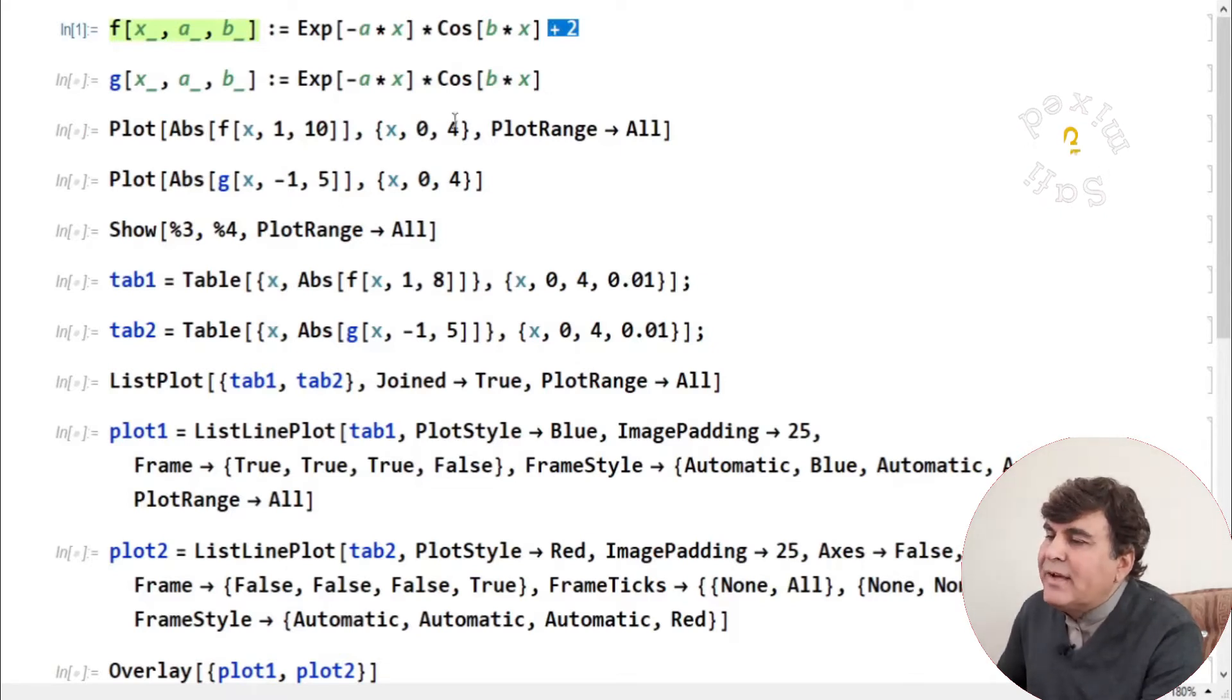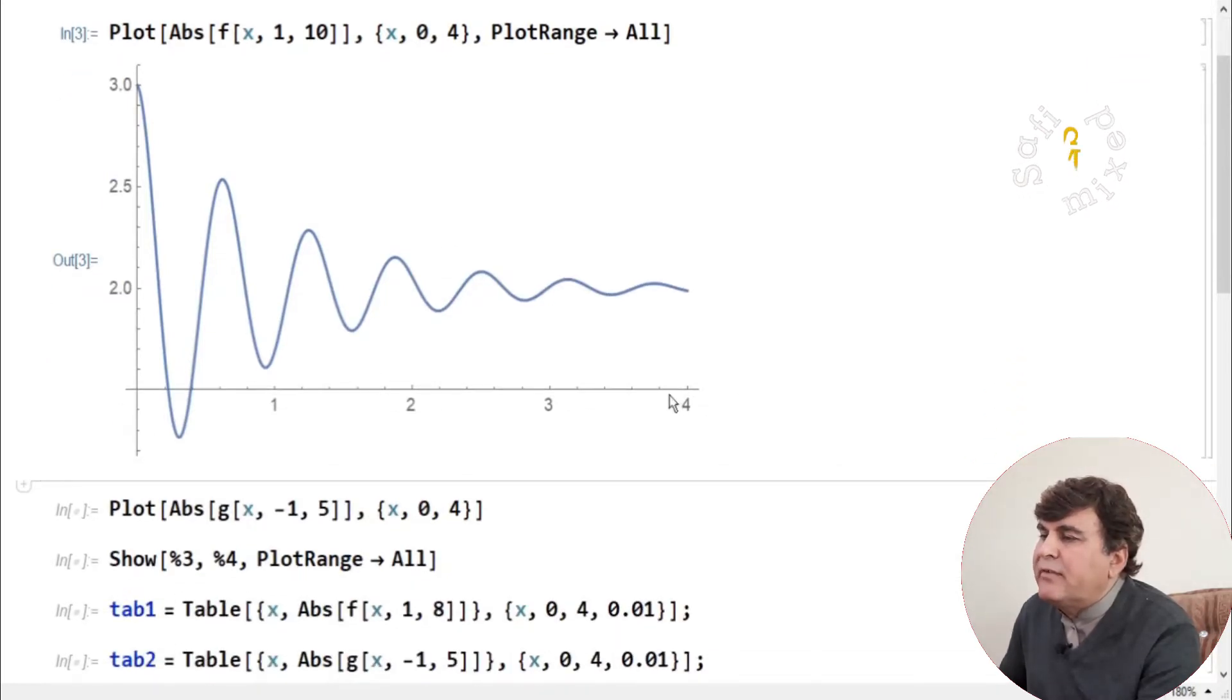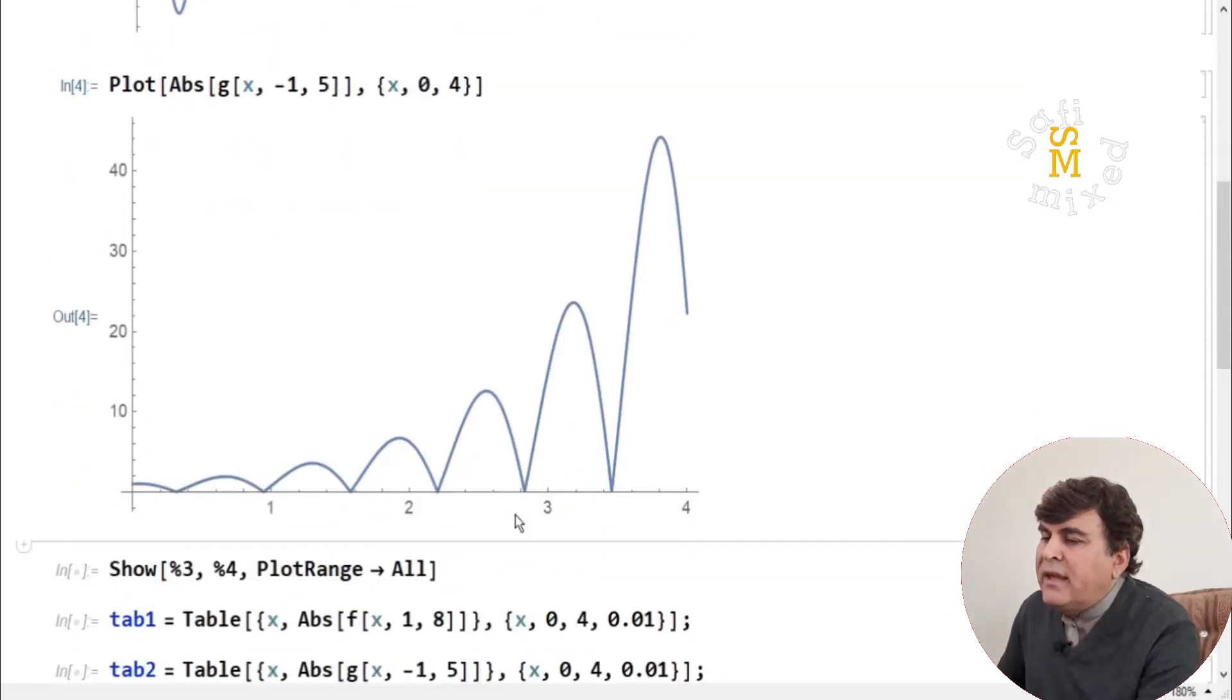If I do it by first running the program for each function, this is the behavior of F function with abscissa value varying from 0 to 4 and ordinate value varying from 0 to 3.